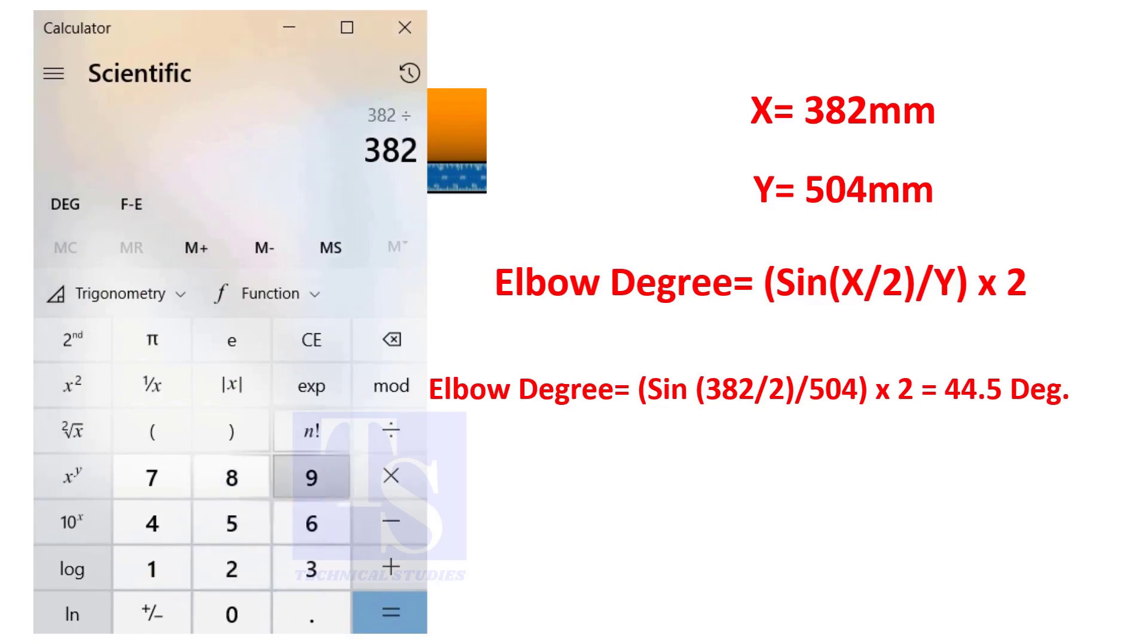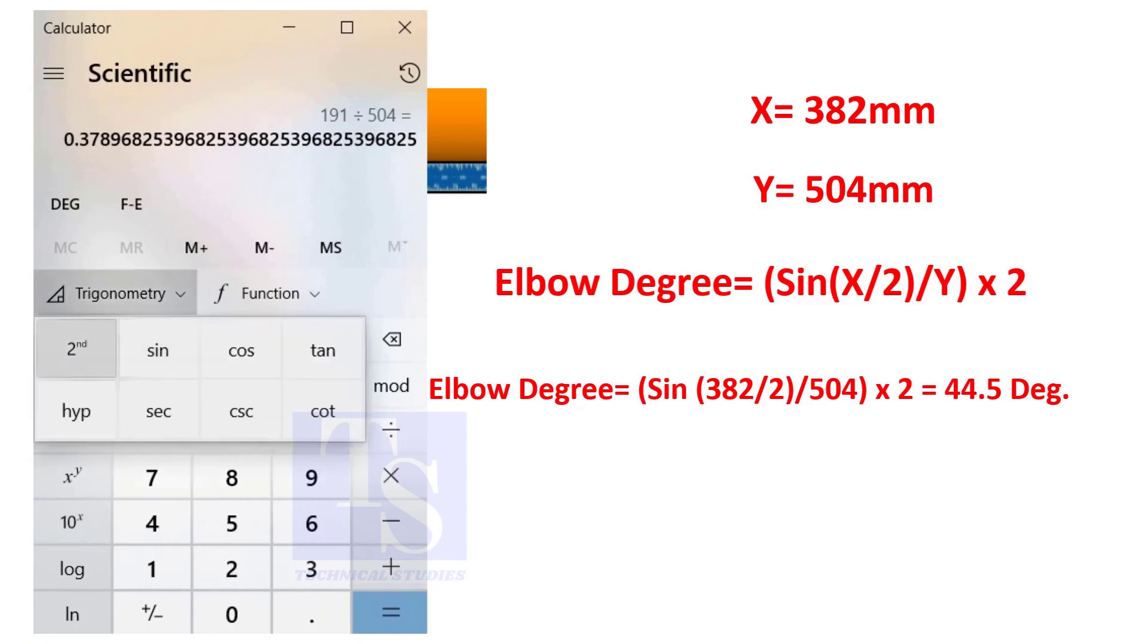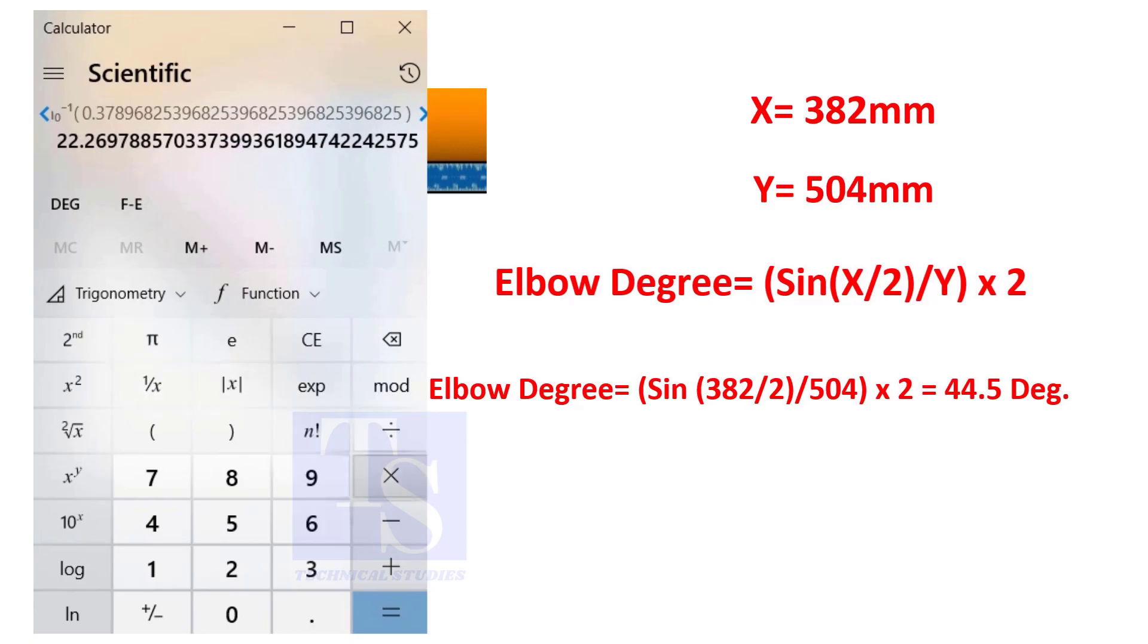You can try this method on pipe spools to measure the distortion due to the welding. So, the degree of the elbow is 44.5.